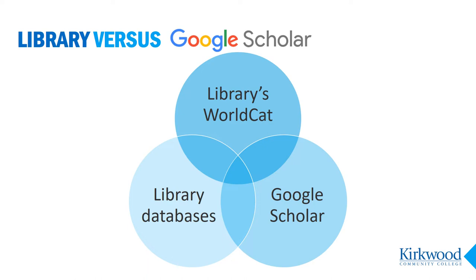Does Google Scholar find everything the library search tools find? There is significant overlap between articles found through library databases or WorldCat search and articles found through Google Scholar, but there are many articles found only through library databases, and Google Scholar also returns articles which are not found in library databases.